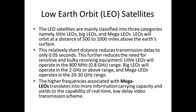LEO satellites are classified into three categories: little LEO, big LEO, and mega LEO. LEOs orbit at a distance of 500 to 1,000 miles above Earth's surface, reducing transmission delay to only 0.05 seconds and reducing the need for sensitive and bulky receiving equipment. Little LEOs operate in the 800 MHz range, big LEOs at 2 GHz or above, and mega LEOs at 20 to 30 GHz. The higher frequency of mega LEOs provides more information-carrying capacity and enables real-time low-delay video.